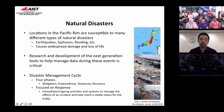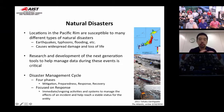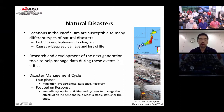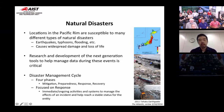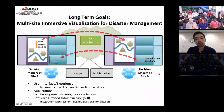The disaster management cycle has four phases: mitigation, preparedness, response, and recovery. Each one individually is a very big effort with many different factors involved. I'm more focused on the response phase. The response is defined as the immediate or ongoing activities and systems to manage the effects of an incident and help reach a stable status for the entity. During this phase, disasters are occurring and disaster management professionals have a lot of data coming from different sources — that's the area I'm working in: how do you manage this data and make it usable and accessible?